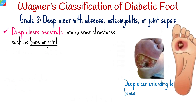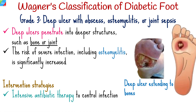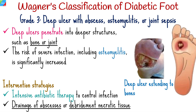Grade 3: Deep ulcers penetrate into deeper structures such as bone or joint. The risk of severe infection, including osteomyelitis, is significantly increased. Intervention strategies include intensive antibiotic therapy to control infection, surgical intervention may be necessary to drain abscesses or debride necrotic tissue, and close collaboration with a multidisciplinary healthcare team.